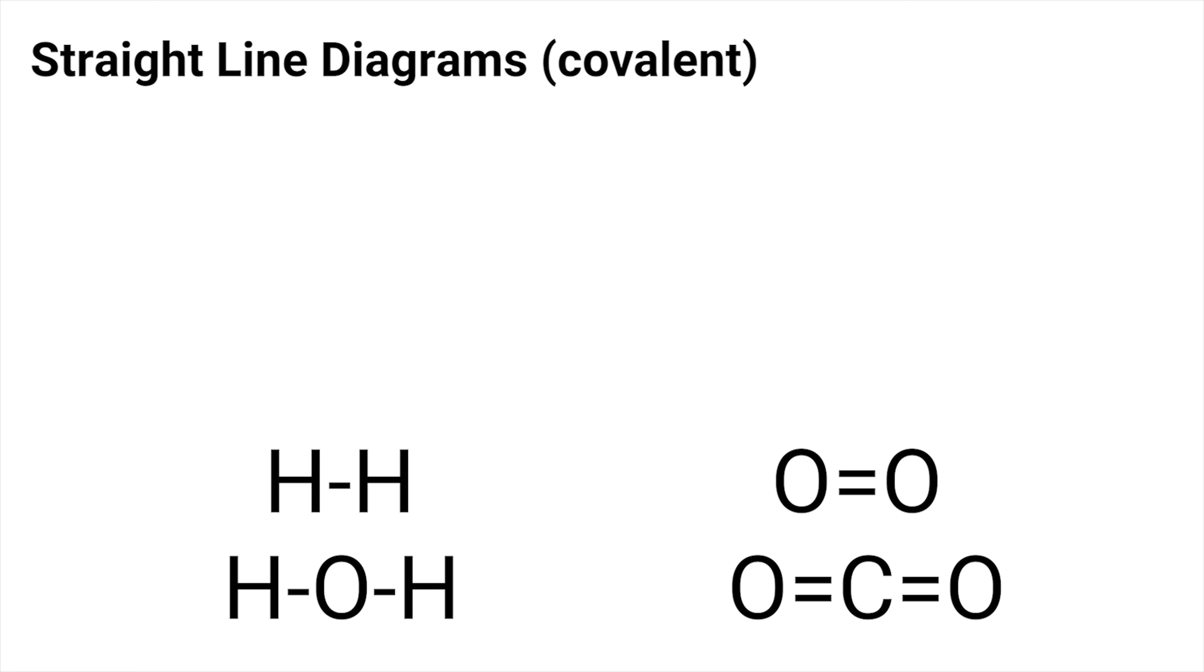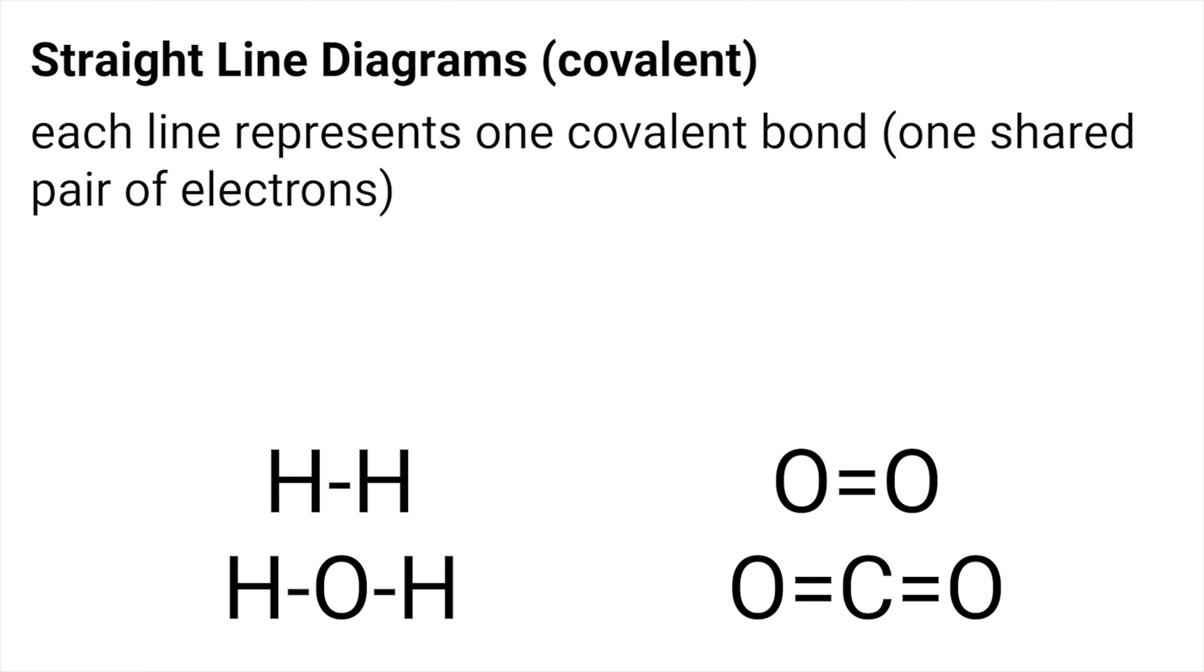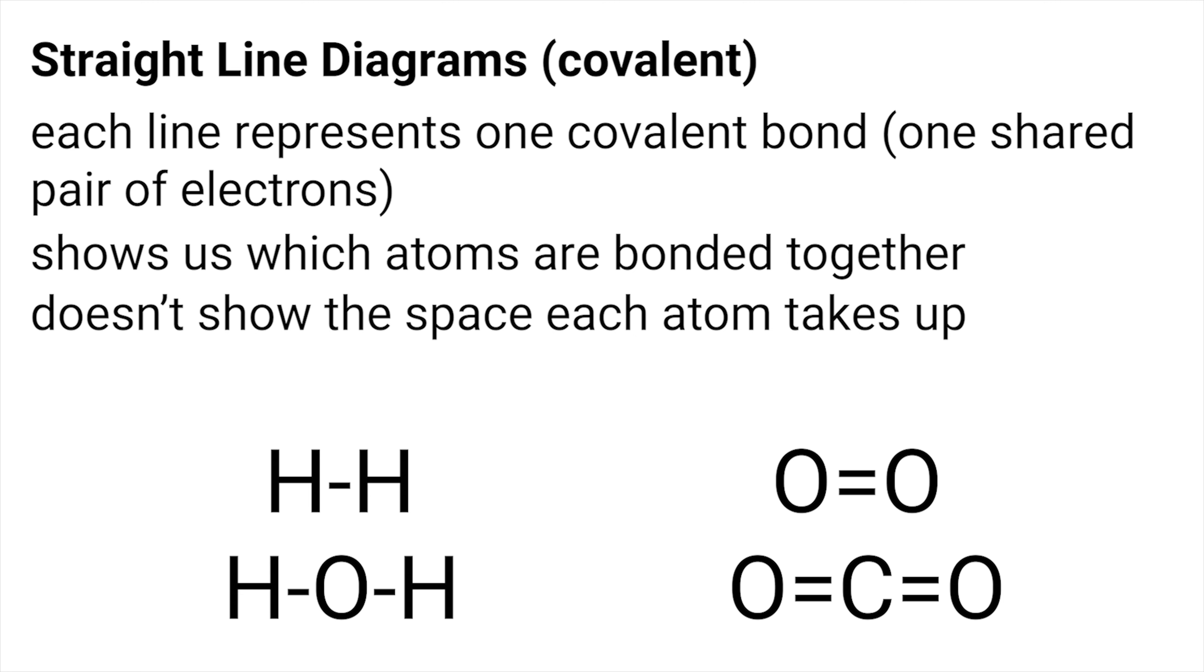The most common way to represent covalent bonds is with a straight line diagram, where each line represents a shared pair of electrons. This model is very good at showing us which atoms are bonded together, but it doesn't allow us to see the amount of space, or the electron density of each atom.